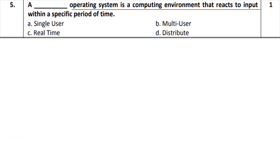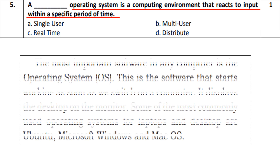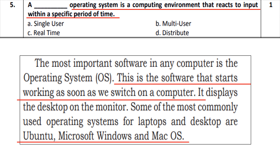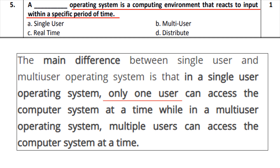Question 5: A dash operating system is a computing environment that reacts to input within a specific period of time. Let's understand operating systems. An operating system is software that starts when we start the computer. There are different types: a single-user OS allows only one user to access the computer at a time. A multi-user operating system allows multiple users to work.